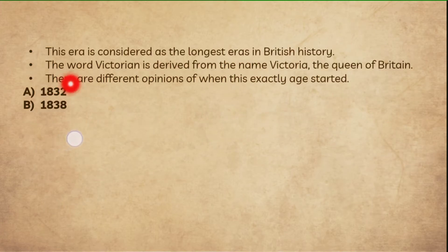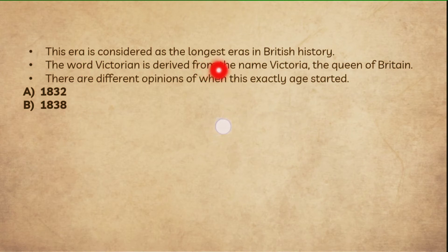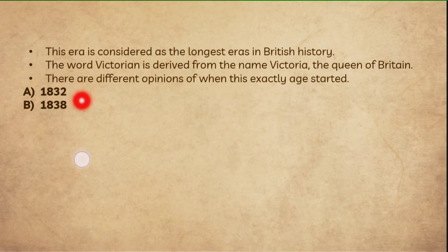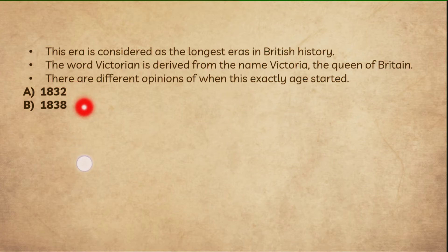When did this age start? You should first know that this era is considered to be the longest era in British history. It is called the Victorian Age because the queen of that time was Queen Victoria. If we look at the years, some consider the start of the age in 1832, others consider it began in 1838.